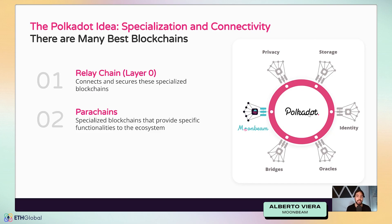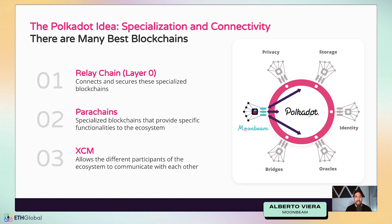The second component of this architecture are the parachains — the term comes from parallel blockchains. The idea is that you'll have specialized blockchains that provide a specific functionality to the ecosystem. For example, within Polkadot you have parachains very specific to privacy like Manta, to storage like Crust, to identity, to oracles, to bridges, and Moonbeam being one of these parachains.